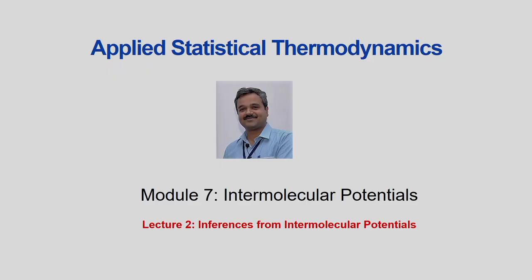In the previous lecture we have seen different interatomic potentials — attractive potentials, repulsive potentials, and potentials which have both attractive and repulsive components. The last potential we discussed partially is the Lennard-Jones potential, also called the LJ 12-6 potential. In today's lecture we are concentrating on the inferences — what does this intermolecular potential indicate.